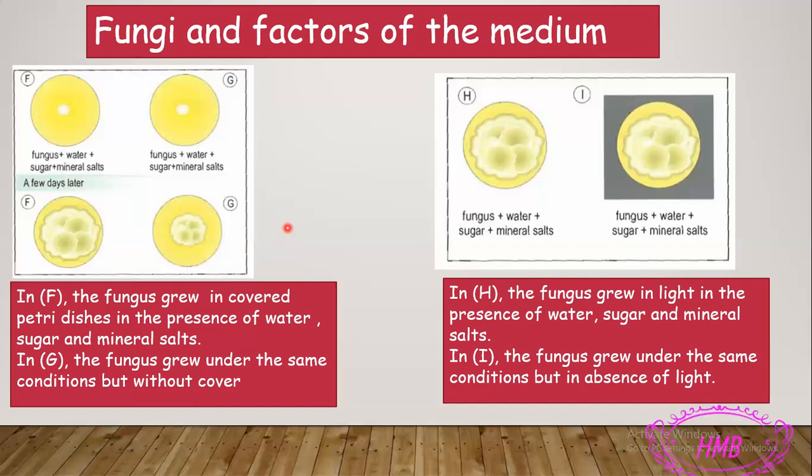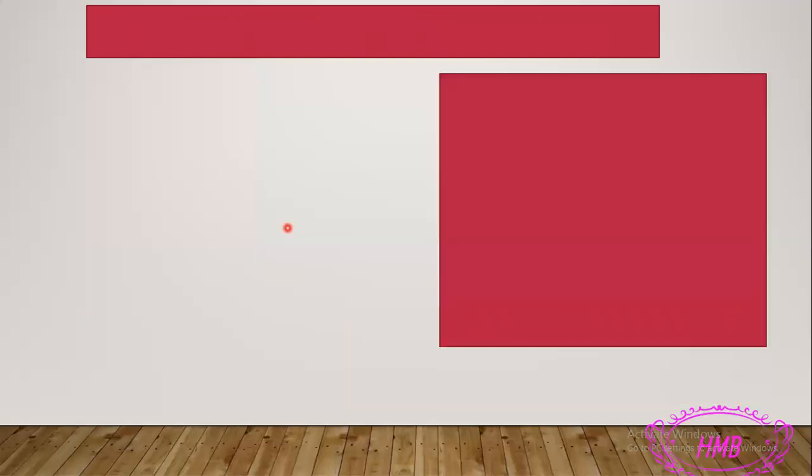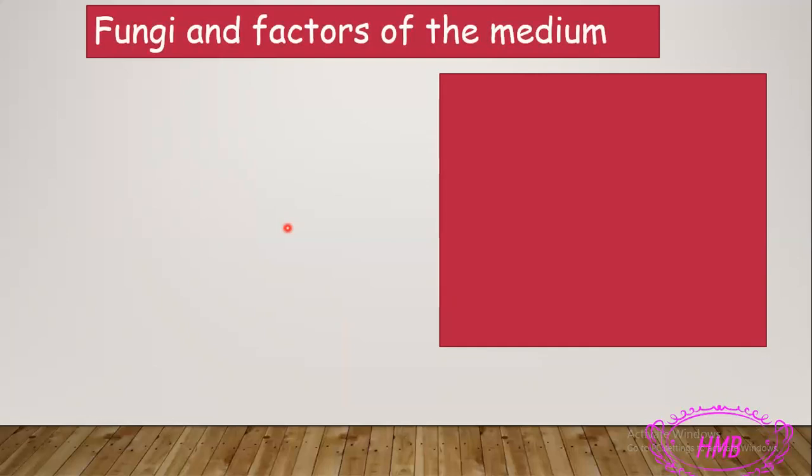So far we have concluded that the nutritive needs of fungi are water, sugar, and mineral salts — organic matter is essential for growth. Regarding medium conditions: humidity favors the growth of fungi, and light has no importance — fungi can grow in both dark and light environments.